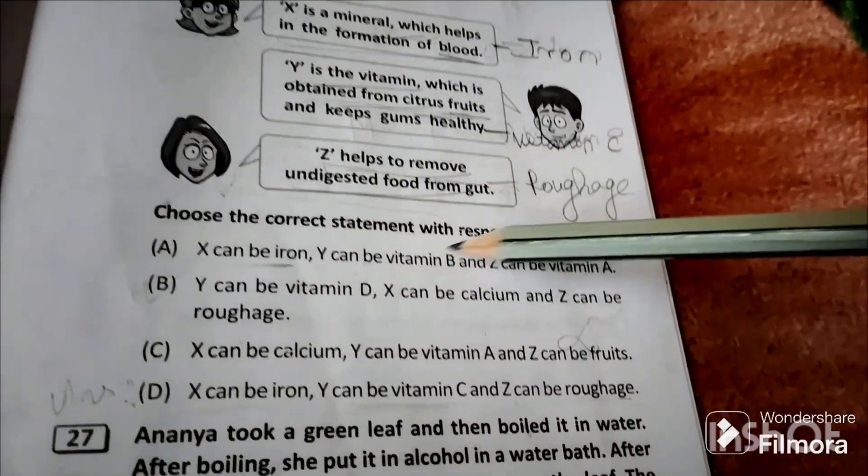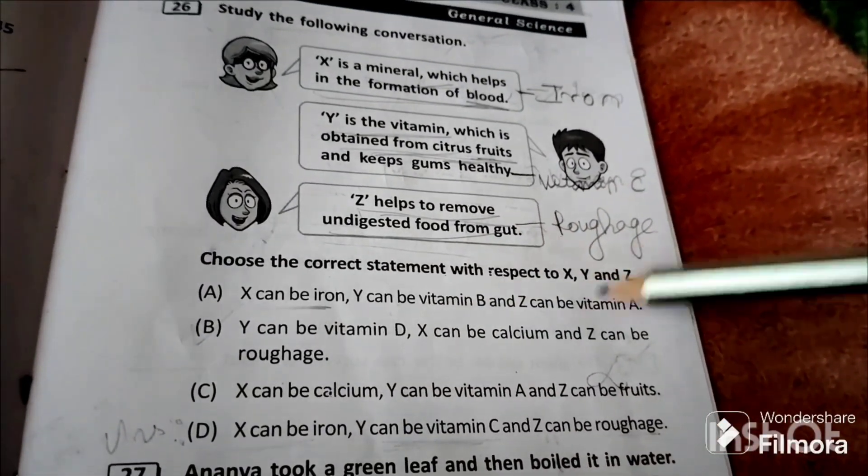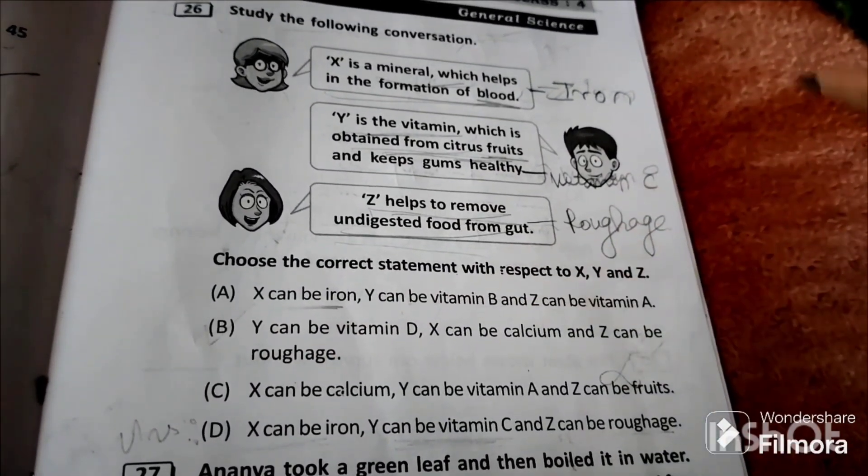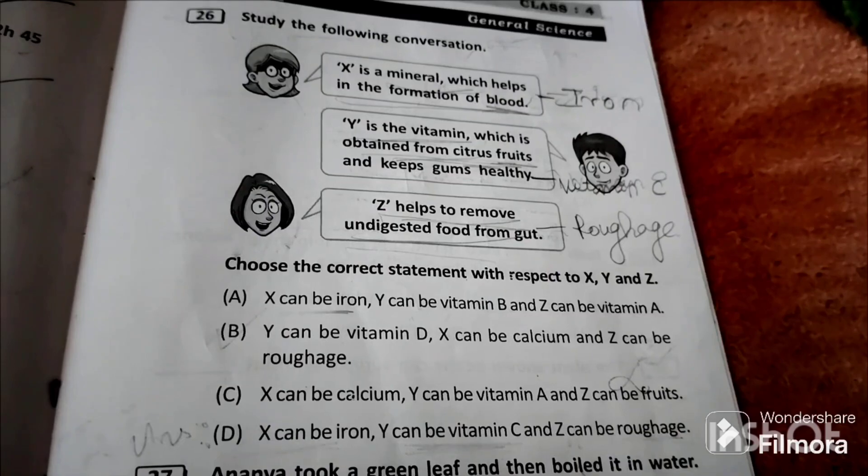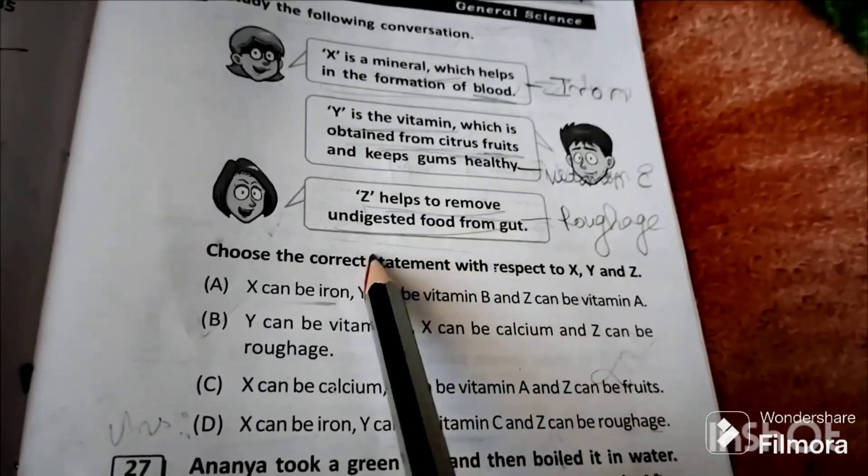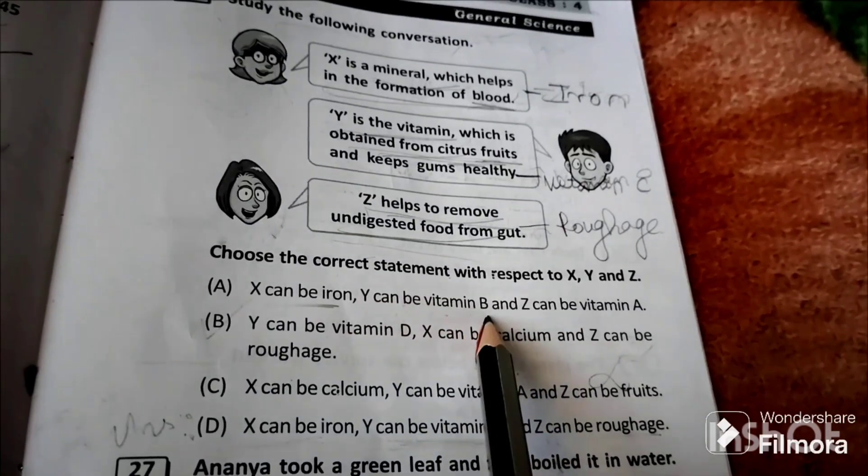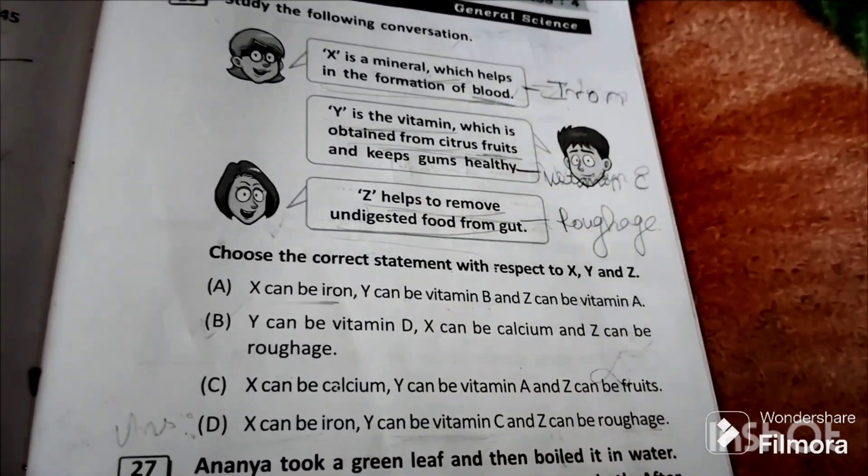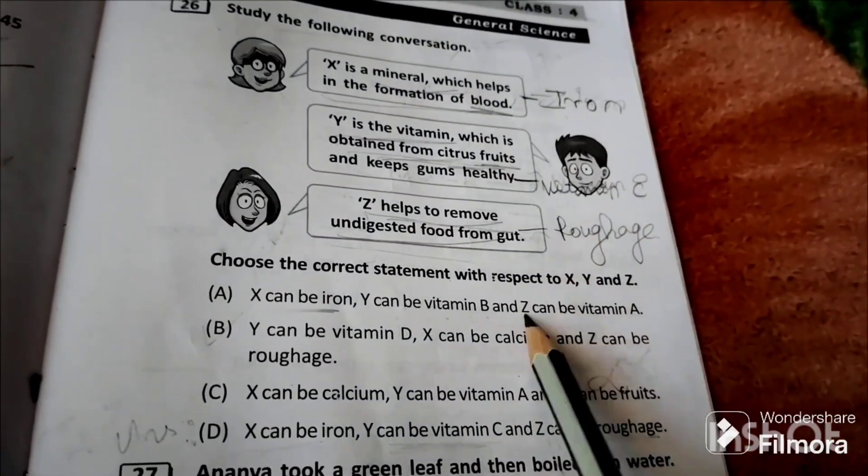Choose the correct statement with respect to X, Y and Z. Option A: X can be iron, Y can be vitamin B and Z can be vitamin A. X can be iron is correct, but Y can be vitamin B is wrong because Y is vitamin C which is obtained from citrus fruits.